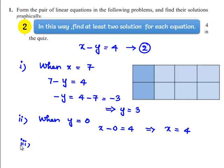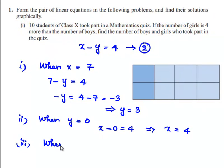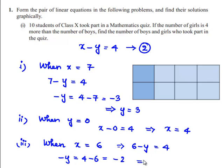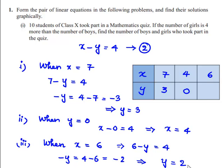When x = 6, we get 6 − y = 4, so −y = 4 − 6 = −2, which gives y = 2. So when x = 6, y = 2. Let us tabulate the found values: when x = 7, y = 3; when y = 0, x = 4; and when x = 6, y = 2.